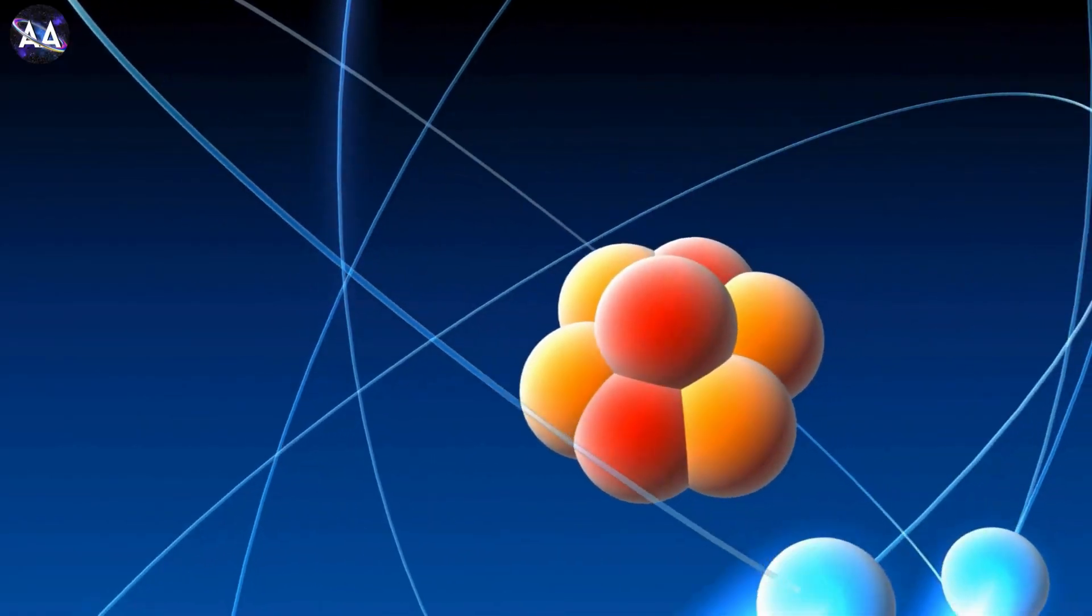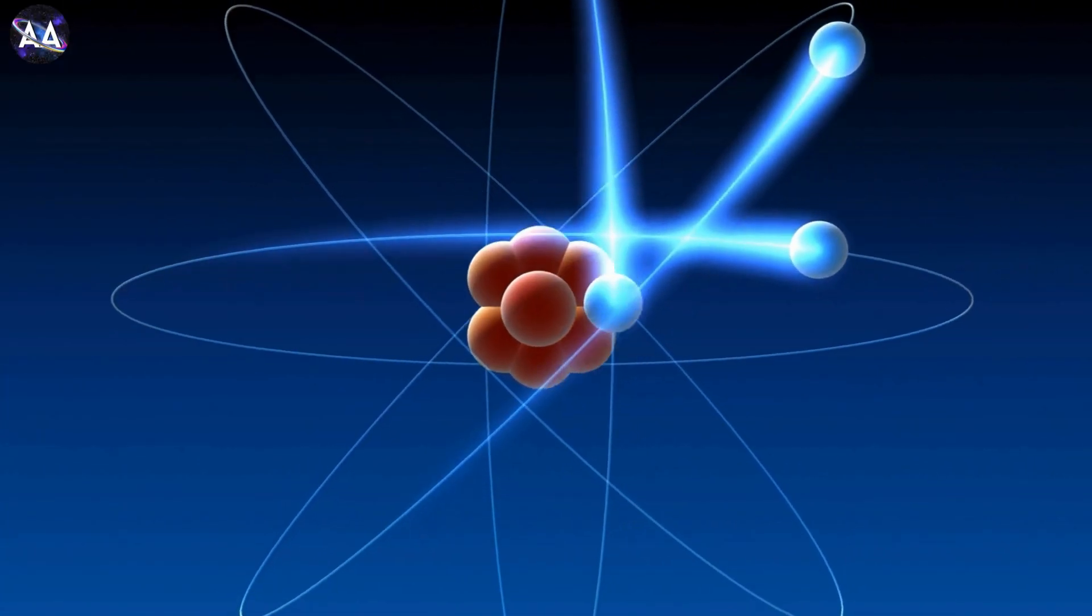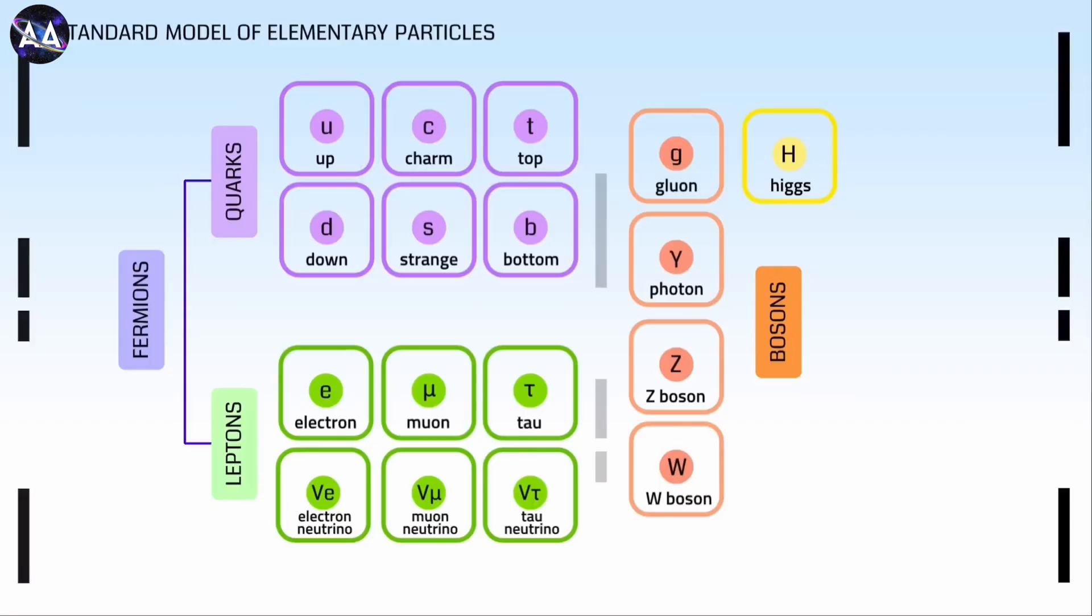The most well-known lepton is the electron, which orbits the nucleus of an atom. There are also neutrinos, which are incredibly tiny particles that rarely interact with anything.